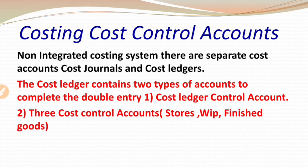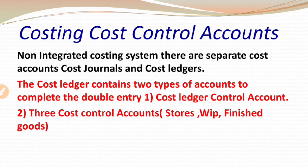Let's start with the non-integrated system. There are two types of systems: integrated system and non-integrated system. Integrated system means cost accounts and financial accounts are both integrated. In a non-integrated system they are separate, which is why it is called non-integrated. The cost ledger contains two types of accounts to complete the double entry.